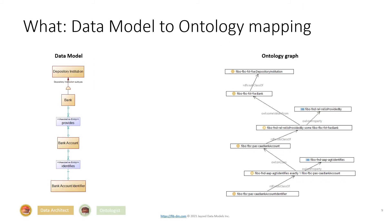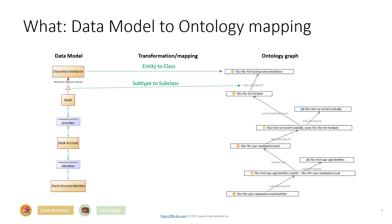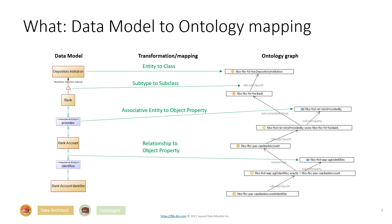So what does COD in reverse do? Here's a data model to ontology mapping. On the left-hand side we have a data model; on the right-hand side is the ontology graph we want to generate out of the model, and for that we have a transformation and mapping. Data model entities become ontology classes. Subtypes become subclass properties. Associative entities and relationships convert to object properties. And finally, cardinalities to class restrictions — and not depicted here — attributes become data properties.